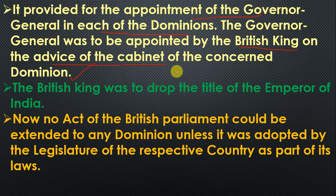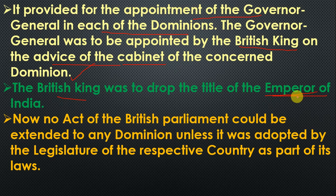If the ministries of the two dominions recommended one person, the British King would appoint that person as Governor General for India. If they recommended another, the British King would appoint a Governor General for Pakistan. It was also stated in this act that the British King would no longer be able to keep the title 'Emperor of India.'